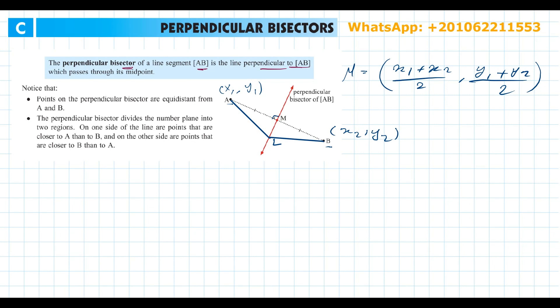The perpendicular bisector divides the number plane into two regions. Points that are closer to A than to B fall on one side, and points closer to B than to A fall on the other side — giving us region A and region B.